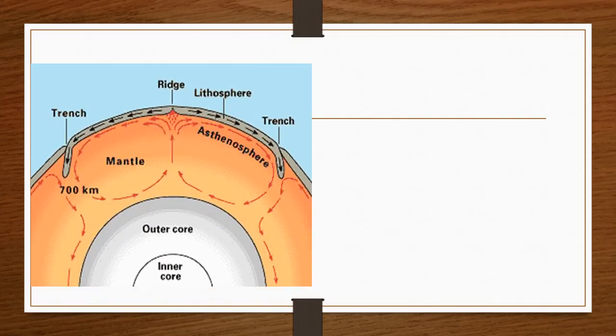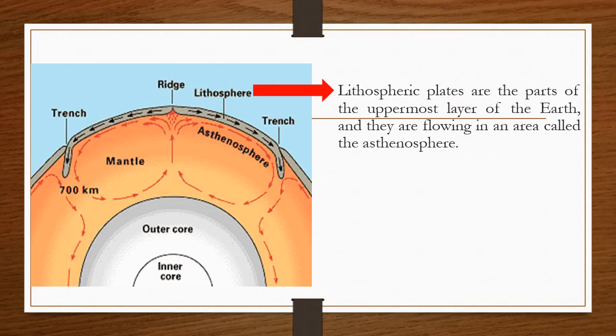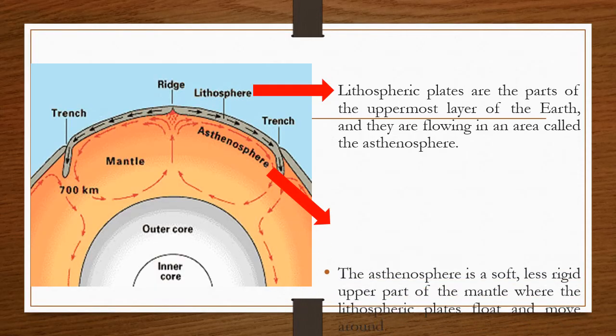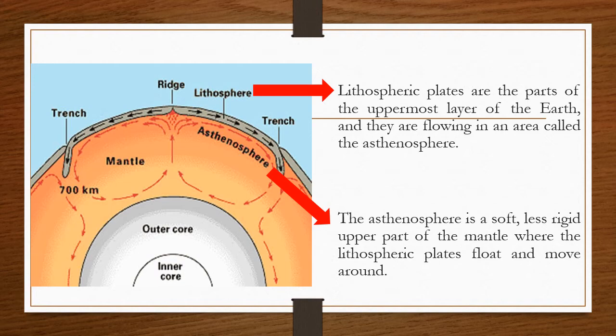Here is an image showing the lithosphere and the asthenosphere. The lithospheric plates are parts of the uppermost layer of the Earth, and they are floating in an area called the asthenosphere. The asthenosphere is a soft, less rigid upper part of the mantle where the lithospheric plates float and move around.